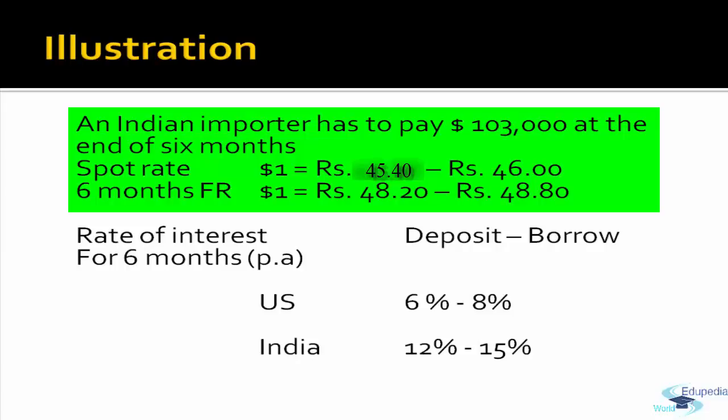In this scenario, if you compute the six-month forward rate based on the deposit rate in the US and India, the computed forward rate will either be more or less — but not equal to 48.20. Because of this disequilibrium, the importer could benefit from money market hedging. The importer has to pay USD 1,03,000.